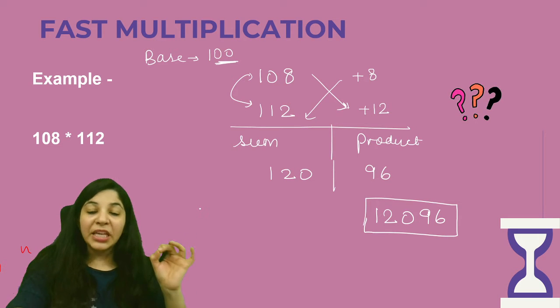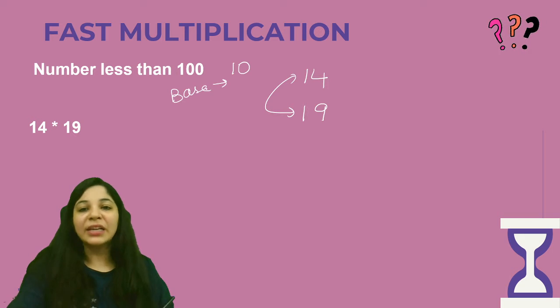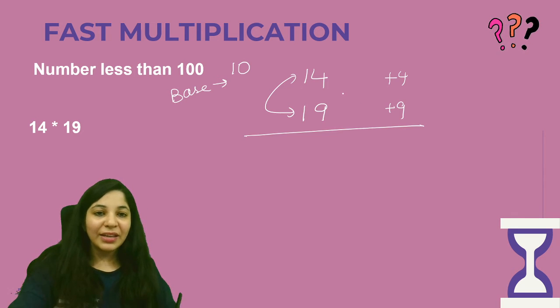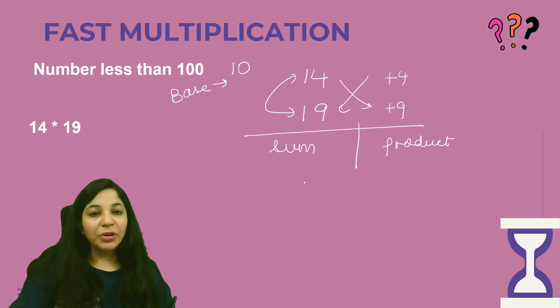So if I have the numbers 14 and 19, the base which is close to both the numbers is 10. The base is 10. And 14 is 4 more than 10, 4 units more than 10 and 19 is 9 units more than 10. You write sum here and here we write the product. So sum here goes to be 23 and product is 36.